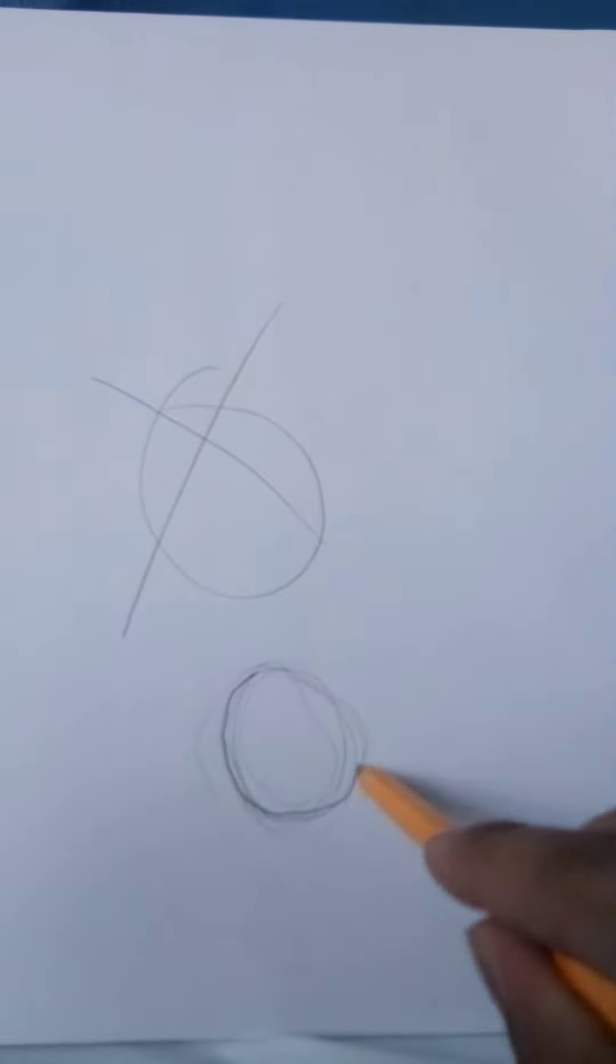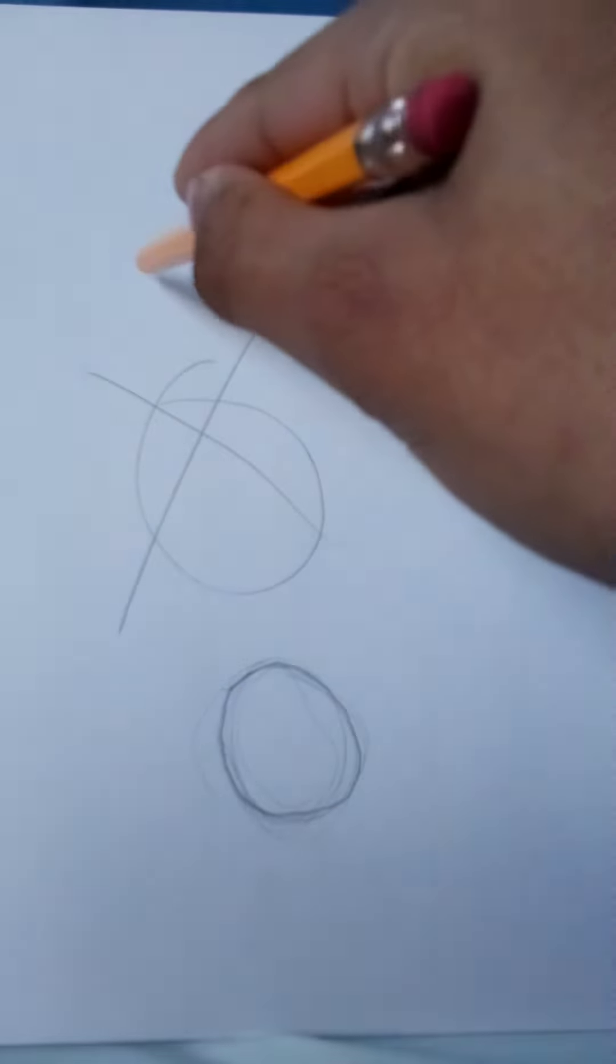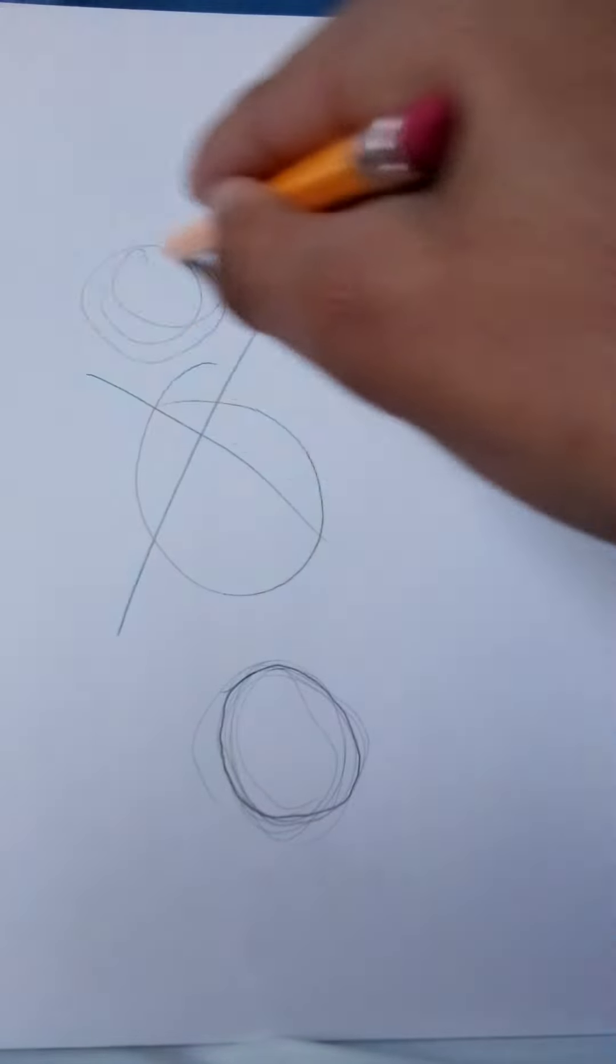Then you're going to want to make one dark line. Now that was pretty messy, you can get it a bit more neat if you want, but you want to get the idea of the shape down.